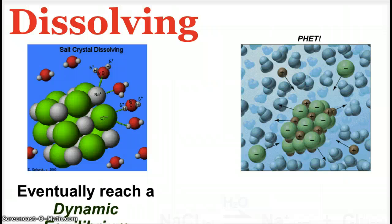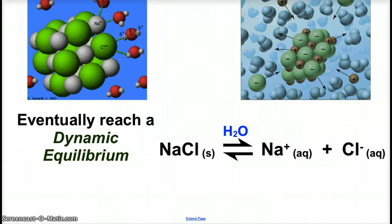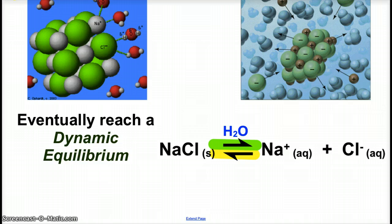In the dissolving process, we'll look at it through a crystalline solid — sodium chloride. Water molecules surround the ions of opposite charge and pull them apart, separating the positive and negative ions. Eventually we reach a dynamic equilibrium: the crystal is still dissolving, but every time some dissolves, some sodium and chloride ions in solution precipitate back to form solid. The forward and reverse processes happen at the same rate — that's why we call it dynamic equilibrium.